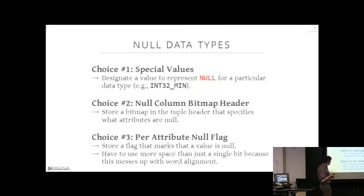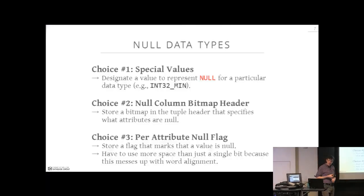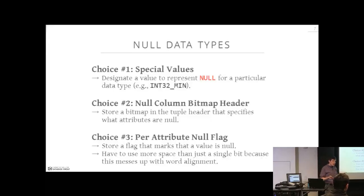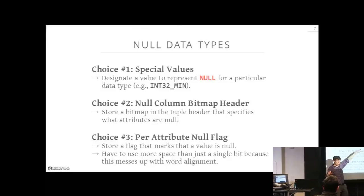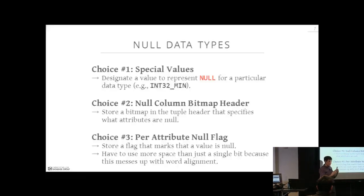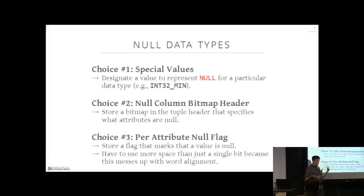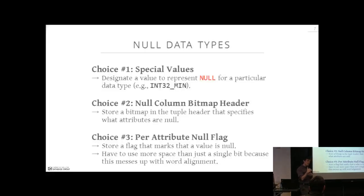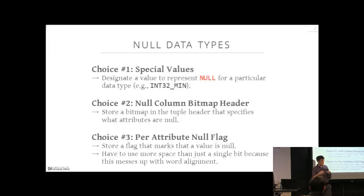Storing NULLs is a tricky point in any database. There are essentially three approaches. The first: designate a particular value in the supported range for a type to represent NULL. For example, for a 32-bit integer, the minimum representable integer could be the null value. This reduces your range by one and requires extra work in the upper layers to throw an error if someone tries to insert that minimum value — similar to how you'd handle inserting a 64-bit integer into a 32-bit integer attribute.